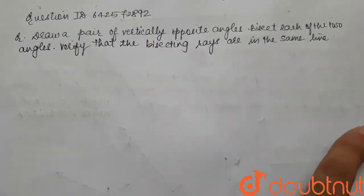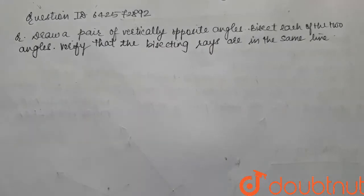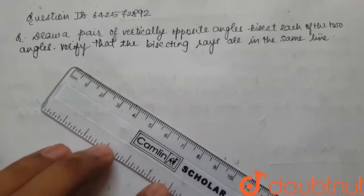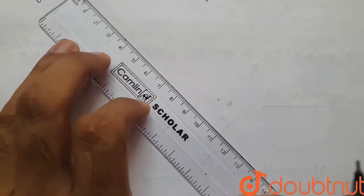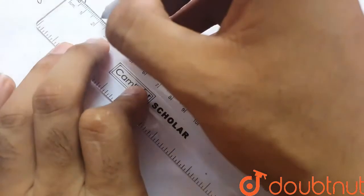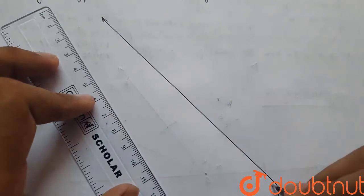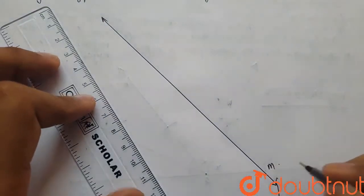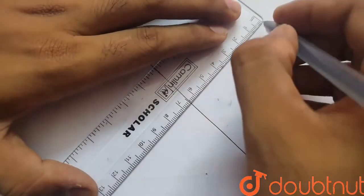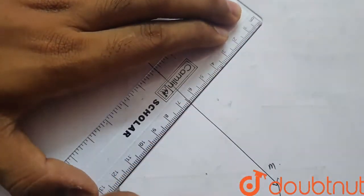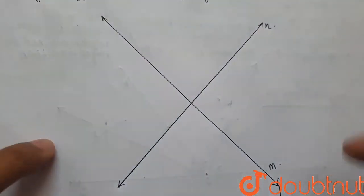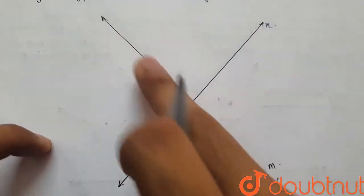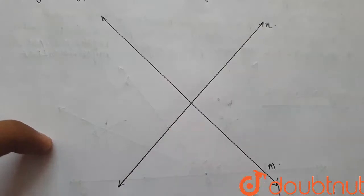So the easiest way to make two vertically opposite angles is to make two lines that intersect each other. So if we make two lines like this, one is say line M and other we call it line L. So the angles that we get are vertically opposite.